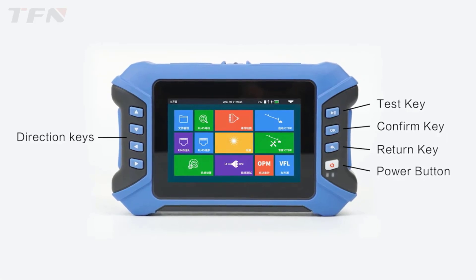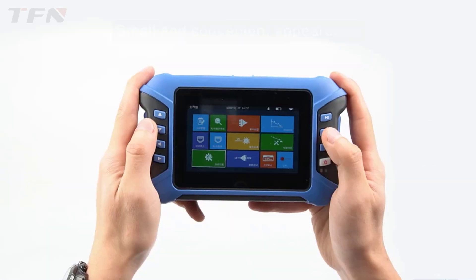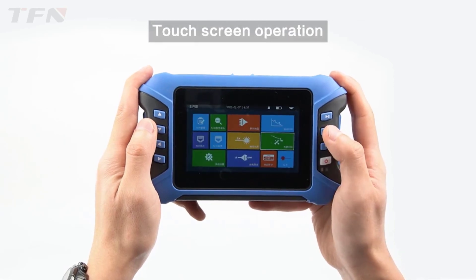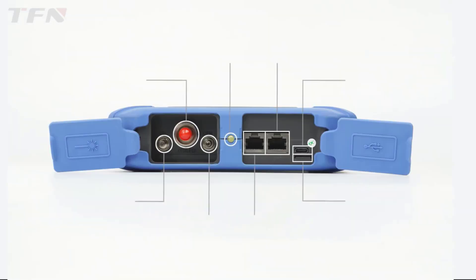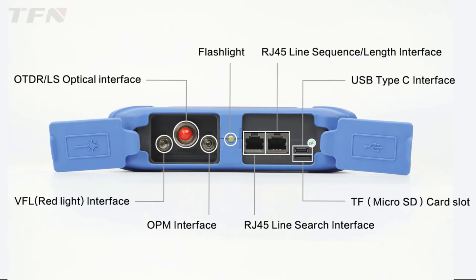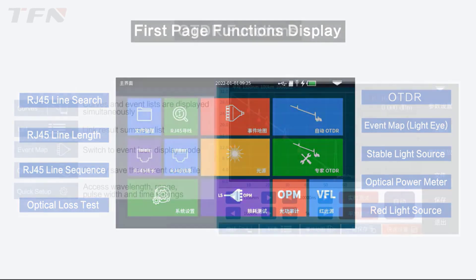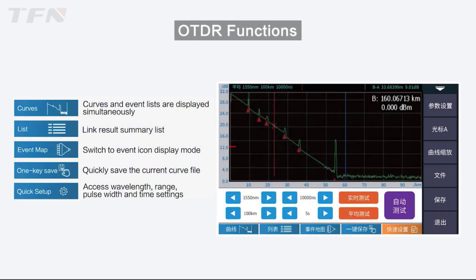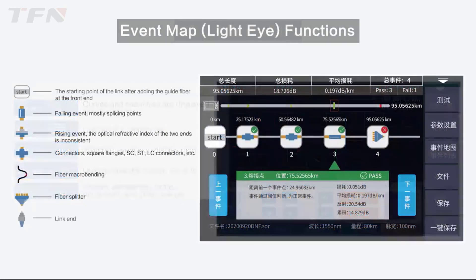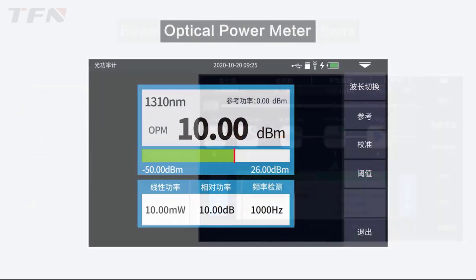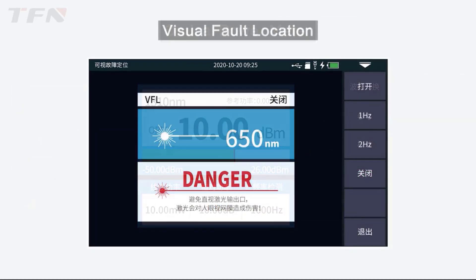An Optical Time Domain Reflectometer, OTDR, is a fundamental tool in the field of optical fiber communication. It serves as the eyes of technicians and engineers, providing invaluable insights into the health and integrity of optical fiber networks. By sending short pulses of light down an optical fiber and analyzing the reflections caused by imperfections, breaks, or losses within the fiber, an OTDR can precisely locate faults and measure signal attenuation along the entire length of the fiber.